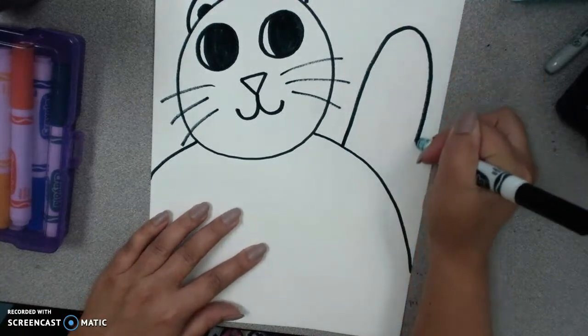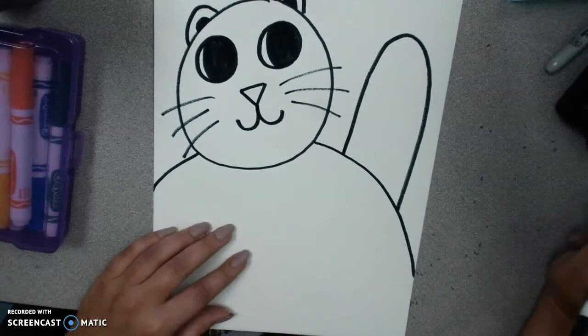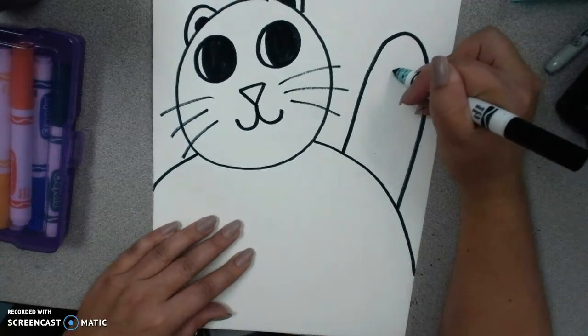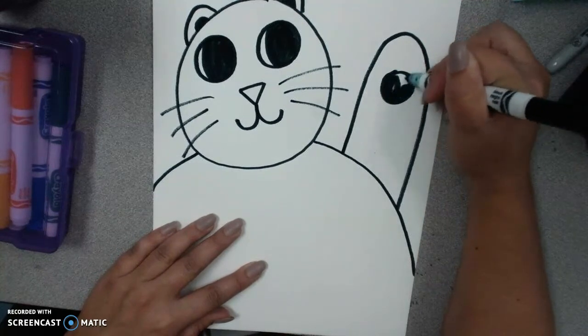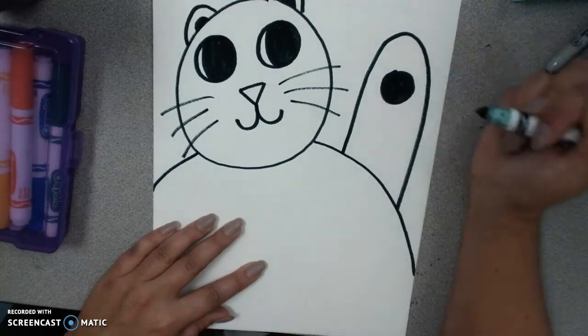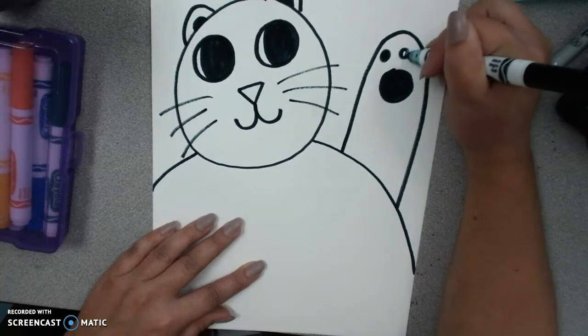Big curve for the arm like he's waving. You can leave that as it is or you can add the paw print to it. Which is one bigger circle and three small ones.